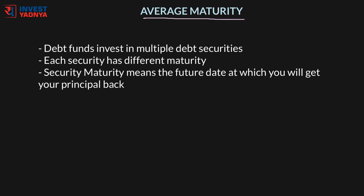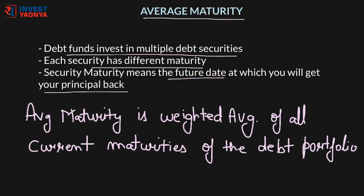Debt funds invest in multiple fixed income or debt securities and each security in the portfolio may have a different maturity. A bond's maturity date indicates the specific future date on which an investor gets his principal back — that is, the borrowed amount is repaid in full and the bond ceases to exist on that day. Average maturity in a debt fund is the weighted average of all the current maturities of the debt securities held in the fund.